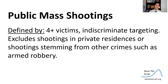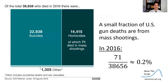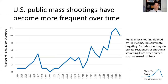I'm going to define public mass shootings as follows: four or more victims and indiscriminate targeting. This excludes shootings that are in private residences, and shootings that stem from other crimes such as armed robbery. Now, public mass shootings are only a small fraction of gun deaths in the United States. However, we've found that they've been growing in frequency — not constantly, but we've seen growth in the frequency of public mass shootings over time.